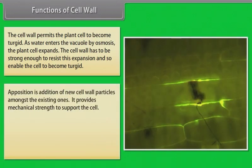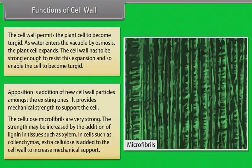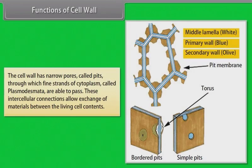Apposition is the addition of new cell wall particles amongst the existing ones, providing mechanical strength to support the cell. The cellulose microfibrils are very strong, and their strength may be increased by the addition of lignin in tissues such as xylem. In cells such as collenchyma, extra cellulose is added to the cell wall to increase mechanical support. The cell wall has narrow pores called pits, through which fine strands of cytoplasm called plasmodesmata are able to pass, allowing exchange of materials between living cell contents.